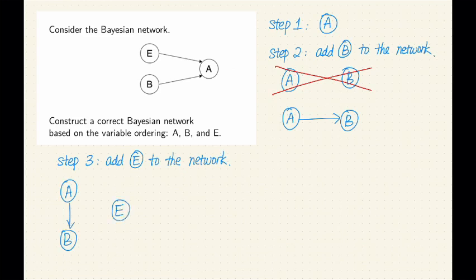First of all, let's try a parent set of size zero, which means no parent for E. If that's the case, we need to verify that E is independent from B and also E is independent from A. Is that the case?